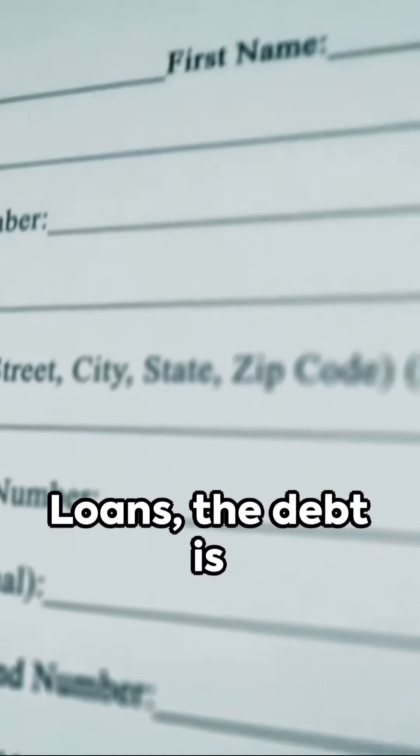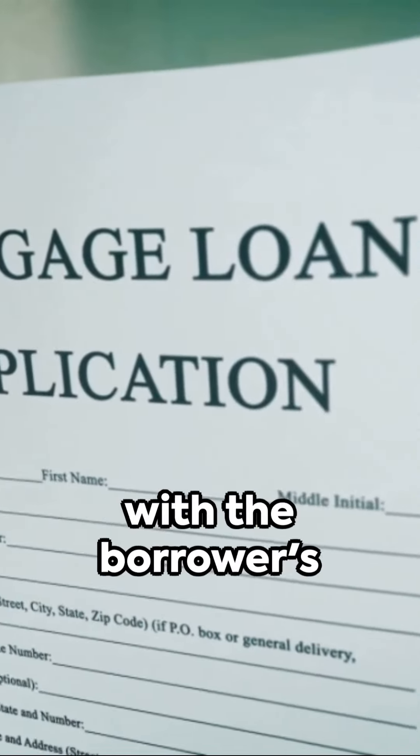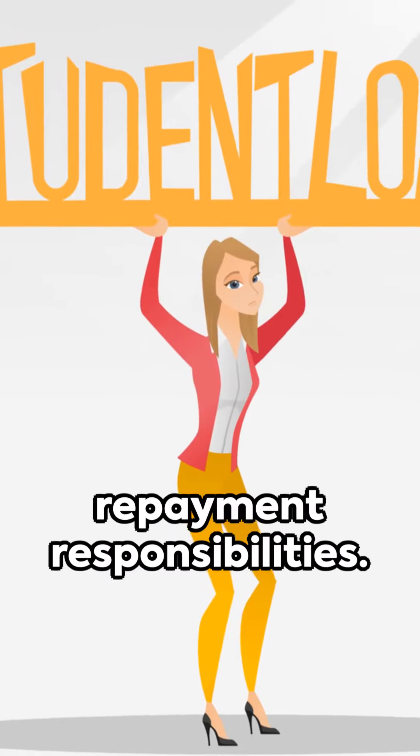For federal student loans, the debt is typically discharged, meaning it's canceled, with the borrower's estate free of repayment responsibilities.